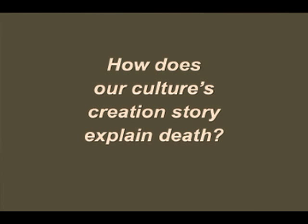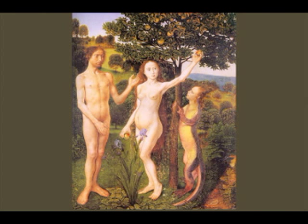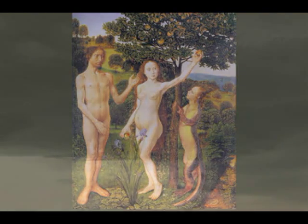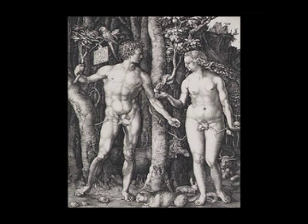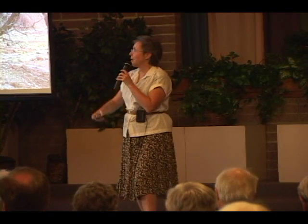How does our culture's creation story explain death? Our Western Judeo-Christian Islamic culture — the peoples of the book. In Genesis, we have the story of Adam and Eve, the apple, and the snake. Paul wrote in Romans chapter 5, verse 12: 'Wherefore, as by one man sin entered this world, and by sin death, so death passed upon all men.' When Adam disobeyed God and ate the apple at the bequest of Eve, and thereby disobeyed God's strictures, that's when the fall happened — when God punished the people by having death come into the world.